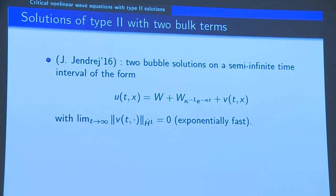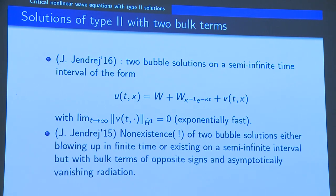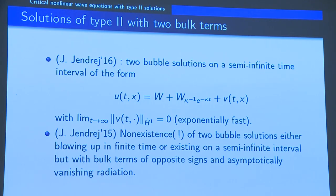He managed to construct solutions which exist in infinite forward time and which decouple into a static term, a term which scales exponentially fast, plus a term which decays. Also interesting in terms of finite-time blow-up with two bubbles: he showed a negative result — you do not have a blow-up solution with two profiles in finite time such that there is nothing left at exactly the level of these two profiles. Maybe there is less variety in terms of soliton resolutions in the radial case for finite-time blow-up.